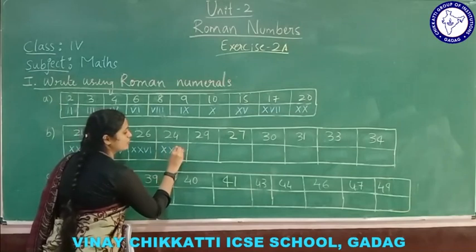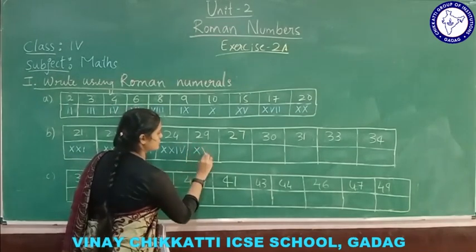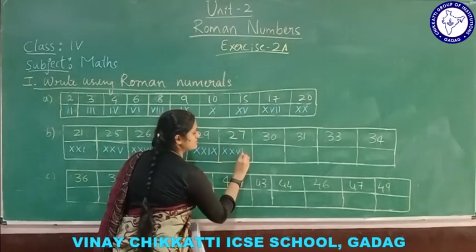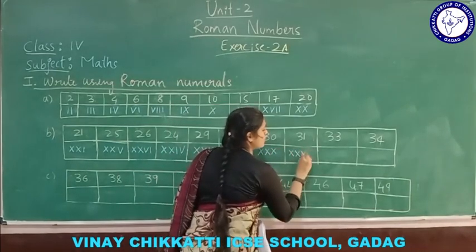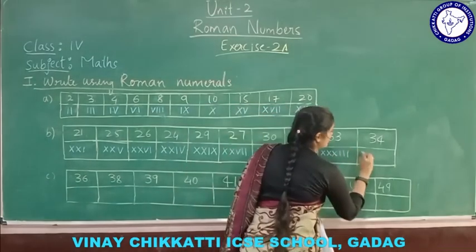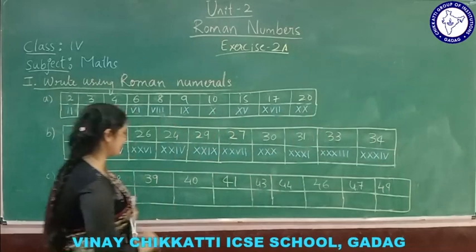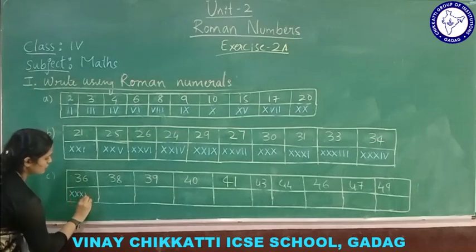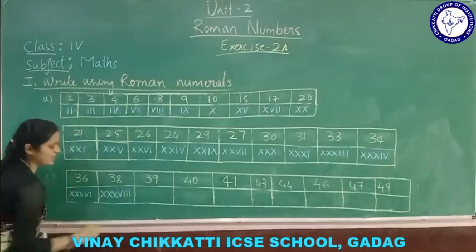29 is X X I X — X X and then X minus 1. 27 is X X V I I. 33 is X X X I I I. 31 is X X X I. 34 is X X X I V — three X and then 5 minus 1. 36 is X X X V I — three X plus 6 (5 plus 1). 38 is X X X V I I I — three X plus 5 plus 3.